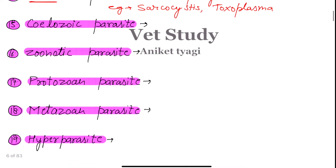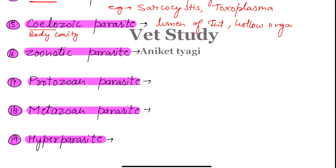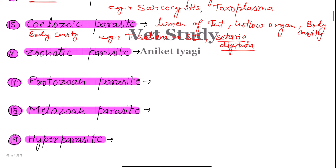Next we have the coelomic parasite. The term 'coelom' means body cavity. So those parasites which are present inside the body cavity are known as coelomic parasites. The body cavity includes the lumen of the intestine or other hollow organs. For example, Taenia solium lives in the small intestine, and Setaria digitata lives in the peritoneal cavity of cattle.